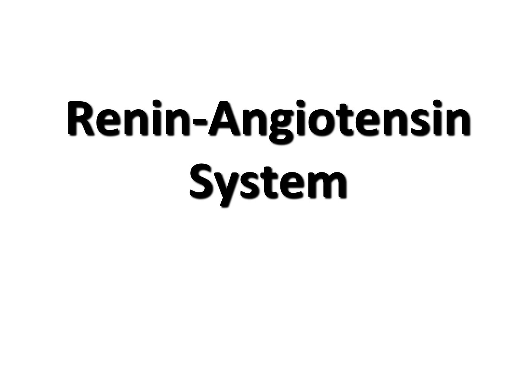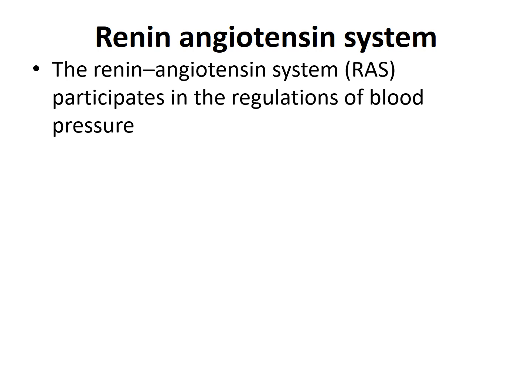The renin-angiotensin system is a long-term mechanism for regulation of blood pressure. There are different ways of blood pressure regulation: the neuronal way involving sympathetic outflow and the vasomotor center; the endocrine way involving adrenaline, noradrenaline, thyroid hormones, and other hormones; and the renal way, where the renin-angiotensin system plays an important role.